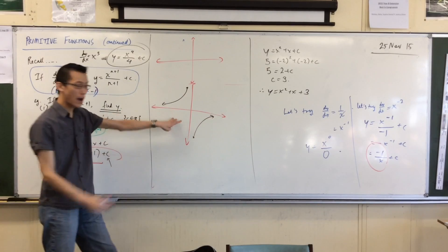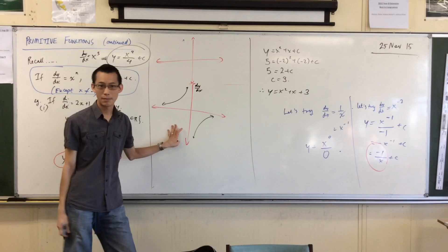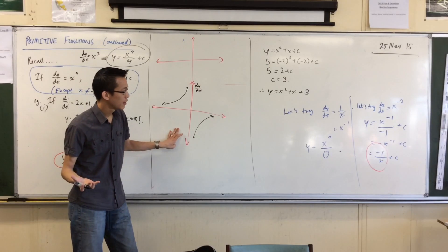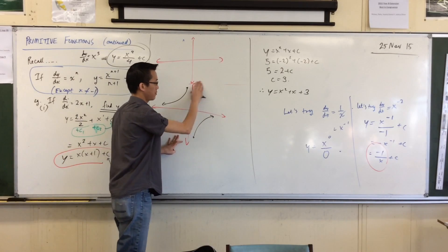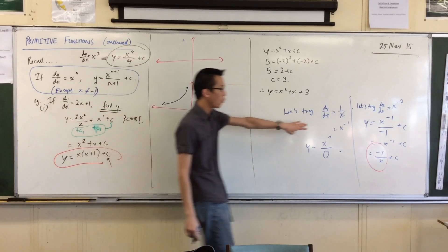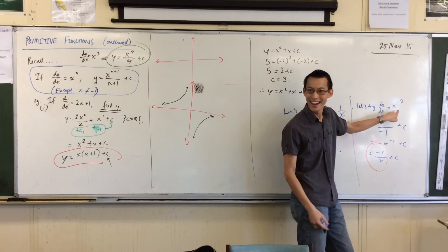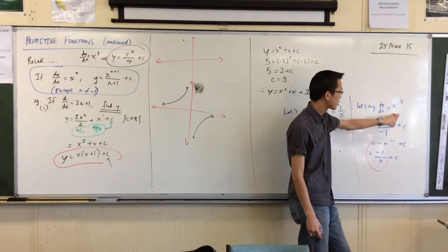Now, this is my graph of dy on dx. At least it's one of them. No, sorry. This is my original function. That's where I've ended up. This is one of the primitives. Now, what does this graph look like? This is the derivative. I really should have gone upside down. Minus 1 over x squared. What kind of function is it? Has it got some symmetry?